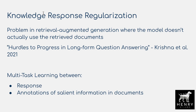Their solution is knowledge response regularization, using multitask learning between the main chatbot response task and an auxiliary task of identifying salient information in the retrieved documents. The model alternates between the chatbot task and extracting important information from documents, with the goal that the second task forces the attention layers to actually attend to the retrieved documents and maintain explicit consistency with the retrieved knowledge.